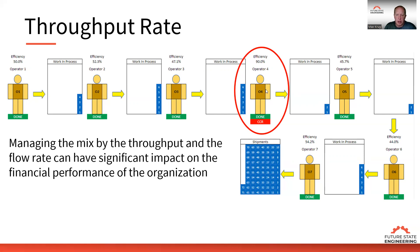Managing the mix by throughput and flow rate can have significant impact on the organization's financial performance. What we want to accept are orders with high throughput and high flow rate — that's the biggest impact. We can rank order all the different products we make to understand which ones are best for us. Of course, there's some strategy behind that: if there's a new customer we're bringing on with potential for high throughput numbers, we might accept lower-throughput orders to gain that customer's business and build their confidence in us as a supplier.